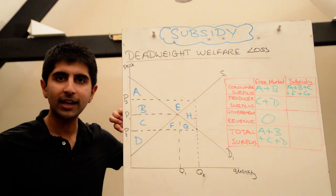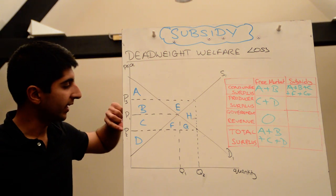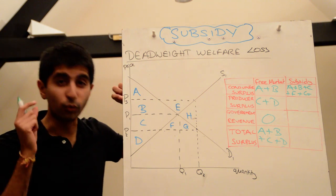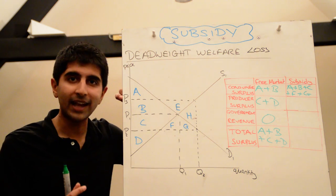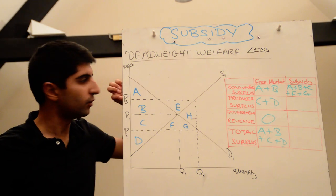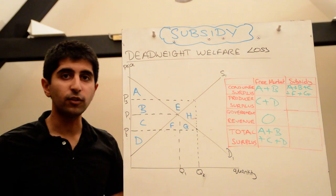So not only are they getting P2, they're getting more on top. They're actually getting the value of the subsidy, which takes us to PS. So that's really the price that producers are getting as a result of this subsidy. So given that that's the price for producers, what is the area of producer surplus?